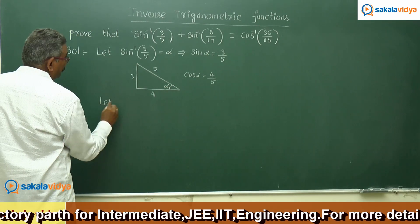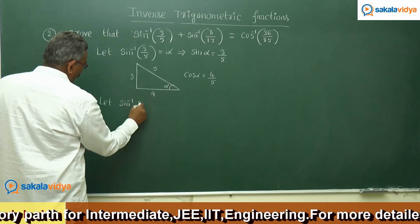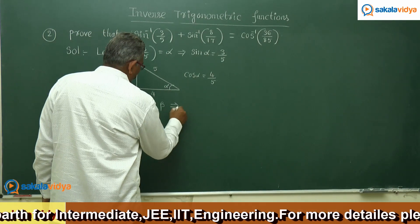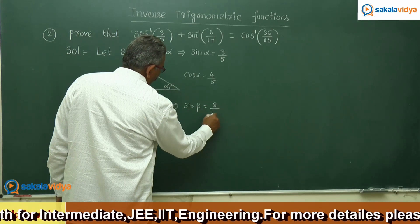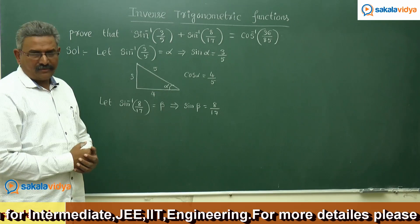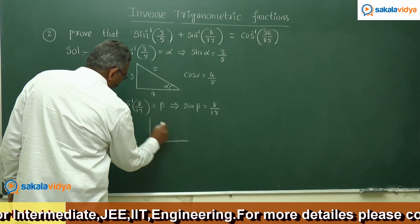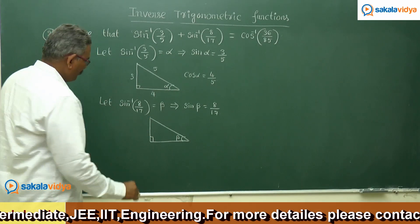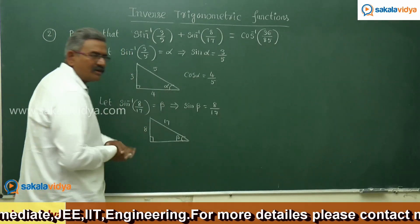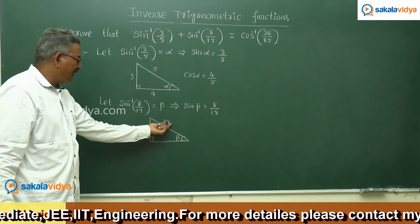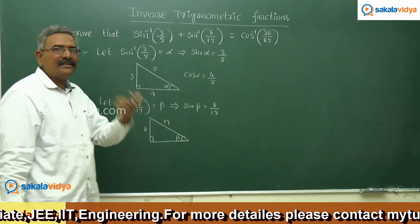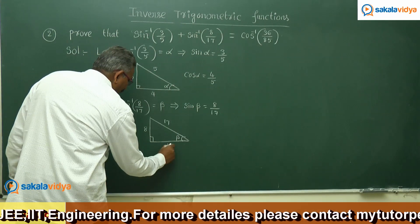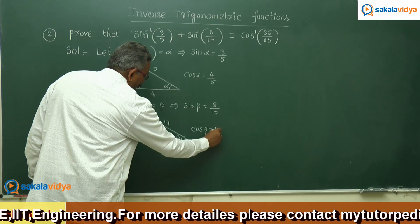Let sin inverse of 8 by 17 equal beta. That implies sin beta equals 8 by 17. We need to find cos beta, so we take another right triangle and specify angle beta. As per the definition, sin beta equals opposite side 8 over hypotenuse 17. The third side is square root of 17 squared minus 8 squared, which is square root of 289 minus 64, equal to square root of 225, that is 15. So cos beta equals 15 by 17.